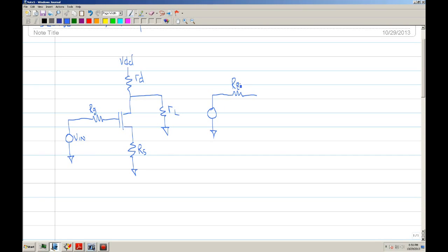And this is your gate resistor. And here you'll have your VGS. And I'll exclude RL for now, just to simplify things.